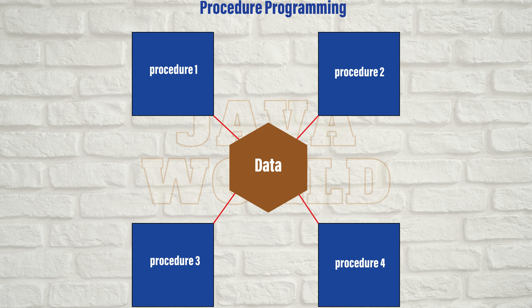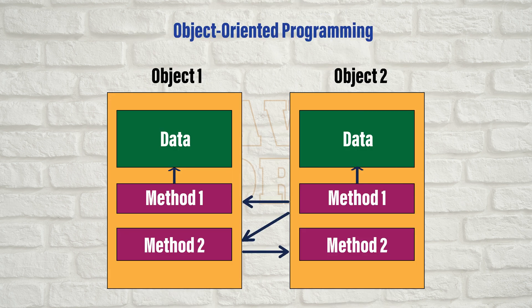In object-oriented programming, both data and methods are within the objects. Without proper access control, it is hard to alter data. It means that access to data is restricted and predictable.